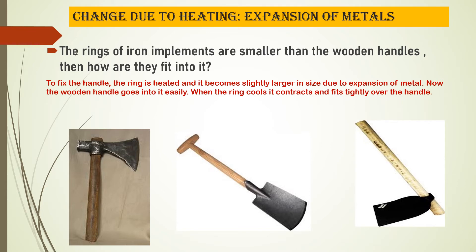Let us look into the physical process of fitting the wooden handle into the iron implement. The ring of the iron implement is usually a size smaller than the wooden handle. When it gets heated, it leads to expansion of the metal and the ring becomes slightly larger in size due to expansion.